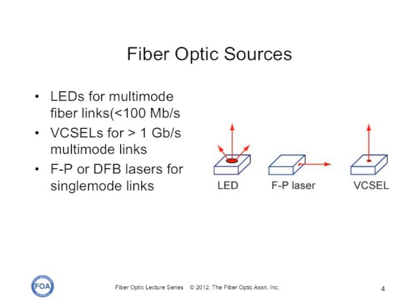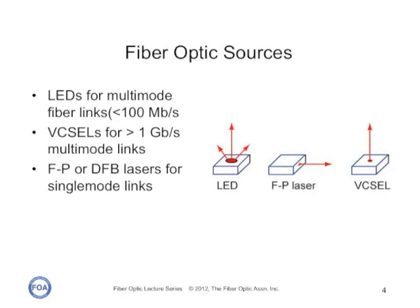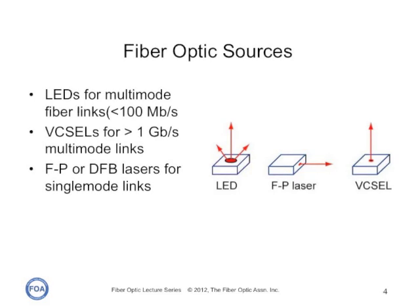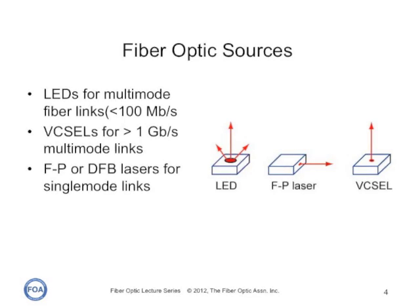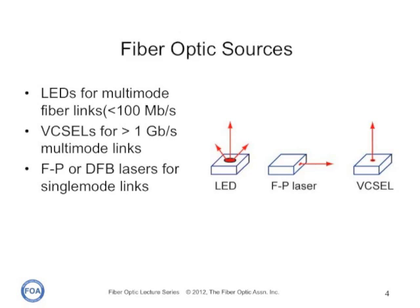Fiber optic sources are typically LEDs, or mostly lasers now, as signal transmission has moved to higher bit rates. LEDs can be used for multi-mode fiber at lengths under about 100 megabits per second, while VCSELs are used for multi-mode links from one to 10 gigabits per second. For single-mode systems, we use Fabry-Perot or DFB lasers.